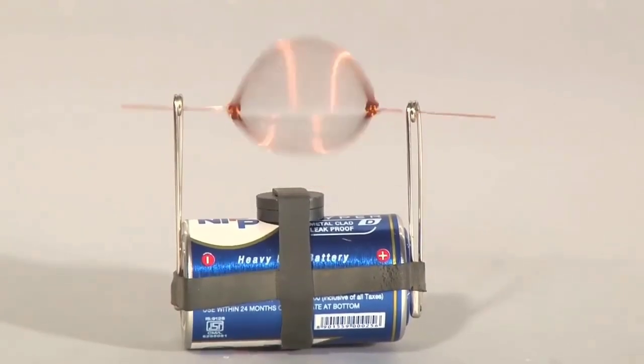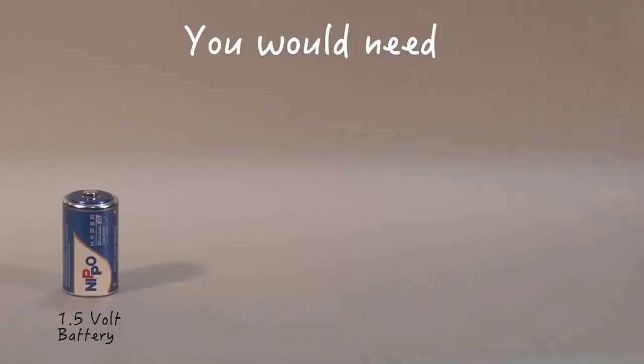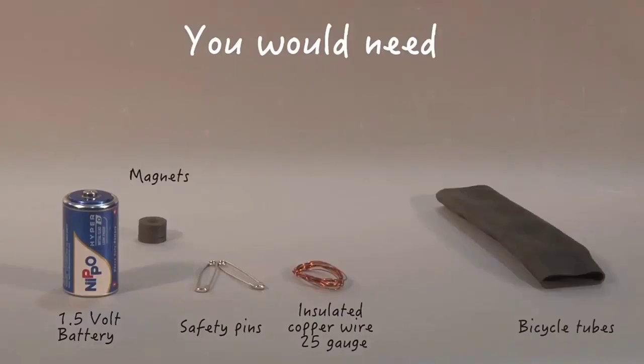Today let us make a very simple DC motor with household materials. You would need a battery, safety pins, insulated copper wire, magnets, an old bicycle tube, scissors and a cutter.